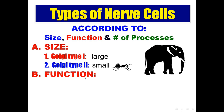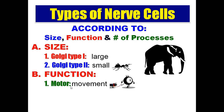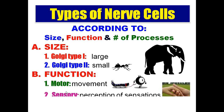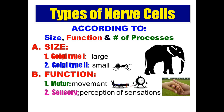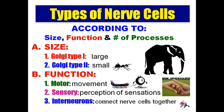According to function, we have three types of nervous cells. Motor neurons are responsible for movement. Sensory nerve cells are responsible for perception of sensations. And interneurons connect motor and sensory neurons, or motor with motor, or sensory with sensory.